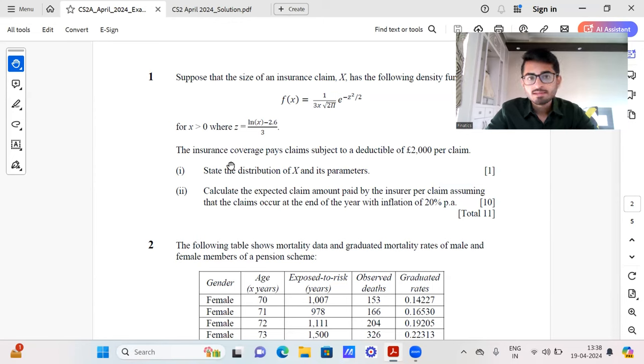Hi everyone, so in this video we shall be discussing the indicative solution for IFA April 2024 CS2A paper. To begin with regarding how I found the difficulty of the paper, I thought this paper was relatively easier compared to the previous terms. Again, there were a couple of questions which could have posed challenges. So overall I feel the pass marks should be roughly in the range of 56 plus minus a couple of marks.